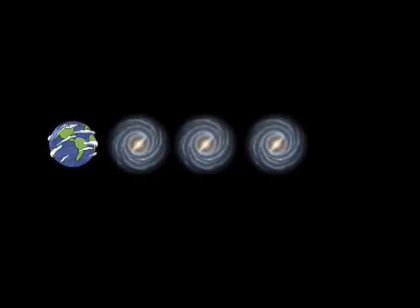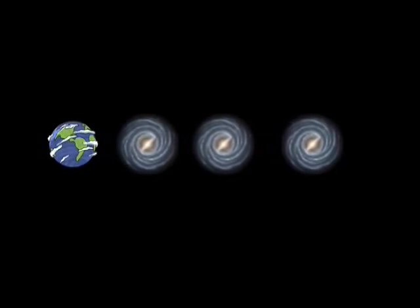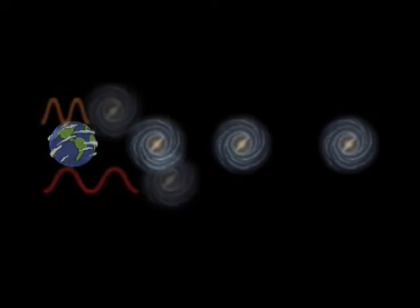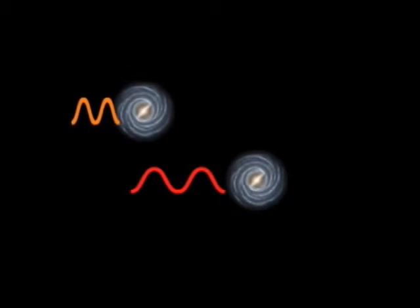So, how does redshift define distance? Well, the light from most galaxies in the universe is redshifted, as seen from the Earth, because the universe is expanding. It turns out that the farther away a galaxy is, the faster it's moving. And the faster a galaxy moves, the more its light is redshifted.